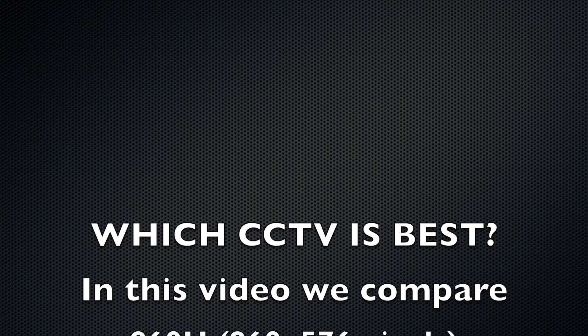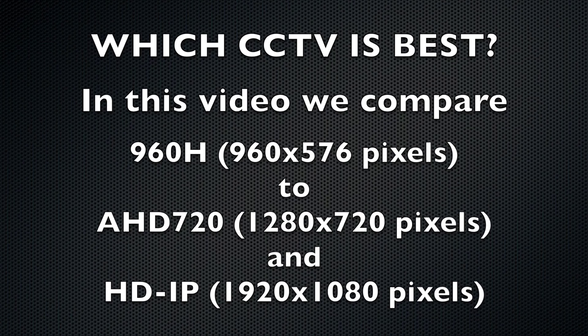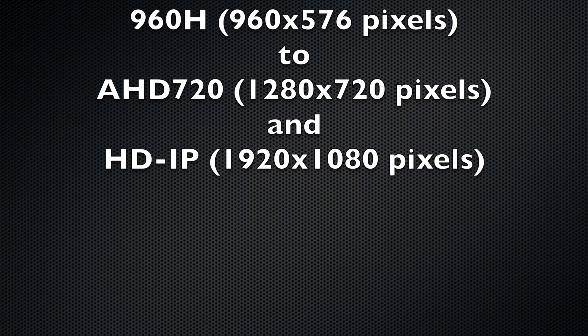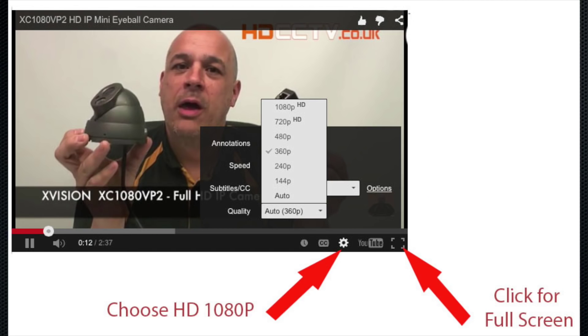Hi, I'm Colin from HDCCTV.co.uk. In this video we show you the difference between three different resolution CCTV systems: 960H, AHD, and IP. 960H is 960 by 576 pixels, AHD is 1280 by 720 pixels, and HD IP is 1920 by 1080 pixels.